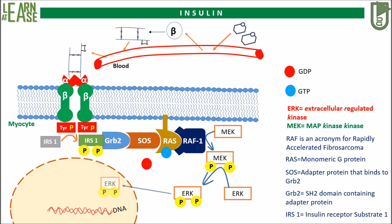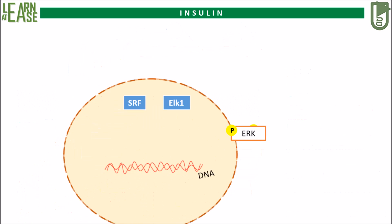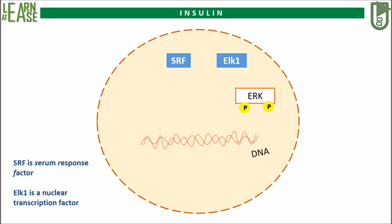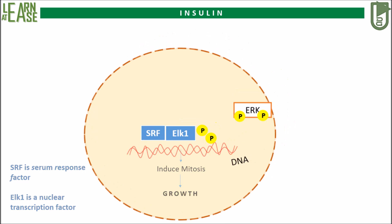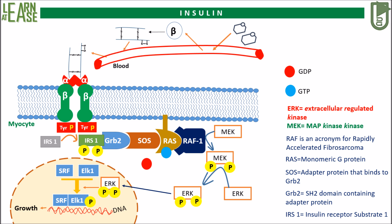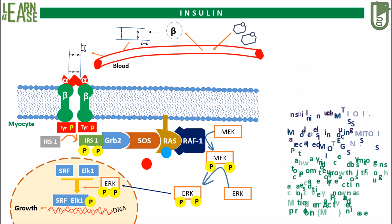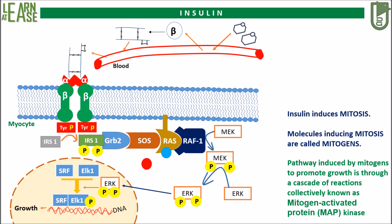ERK will enter the nucleus, where transcription factors such as SRF and ELK1 exist. ERK phosphorylates nuclear transcription factors such as ELK1, activating them. Phosphorylated ELK1 joins SRF to stimulate transcription by binding to specific transcription factors, causing translation of a set of genes needed for cell division — this is how insulin induces mitosis. Molecules inducing cell division are called mitogens. The pathway induced by mitogens to promote growth is a cascade of reactions collectively known as the mitogen-activated protein kinase cascade. This is the full pathway showing activation of the MAP kinase cascade by insulin.